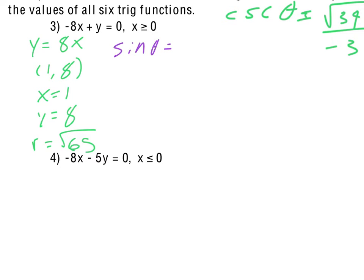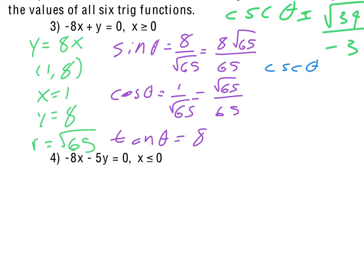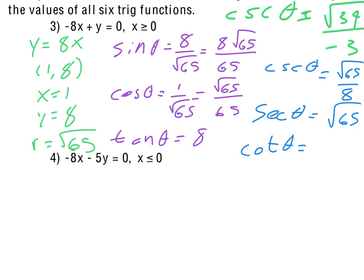It's then a matter of finding the six trig function ratios. Sine of theta, being Y over R, is 8 over the square root of 65. After rationalizing, we get 8 square roots of 65 over 65. Cosine, X over R, is 1 over the square root of 65, which becomes square root of 65 over 65. Tangent of theta is 8 over 1, so just 8. The cosecant is square root of 65 over 8, the secant is just the square root of 65, and cotangent is 1 over 8.